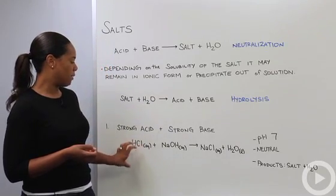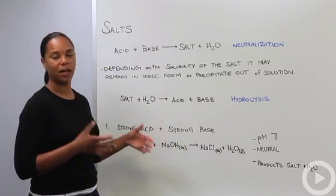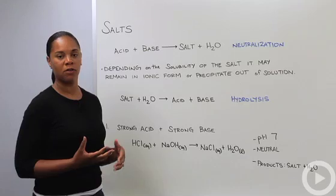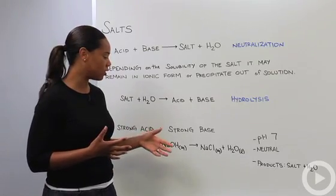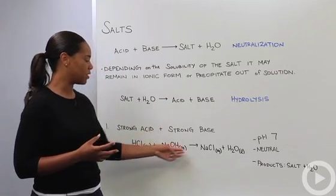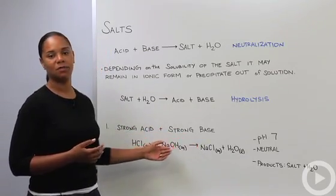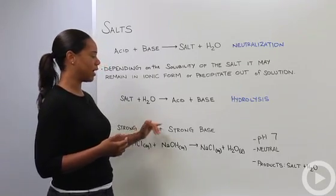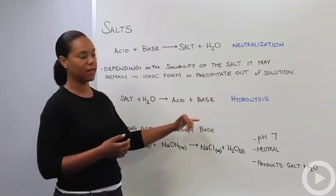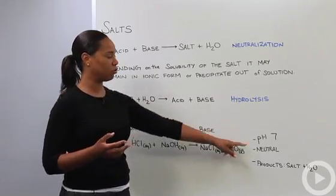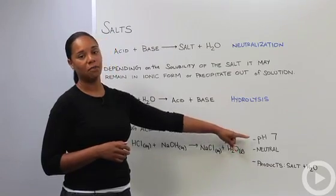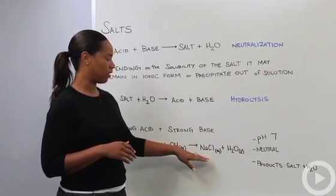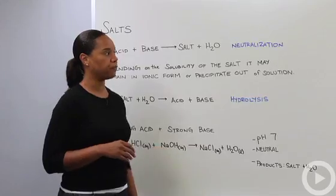Going back to what you know about other chemical reactions, this is a kind of acid-base displacement reaction. Because you have a strong acid and a strong base, the solution is going to be completely neutral, with a pH of 7. Your products will be salt and water.